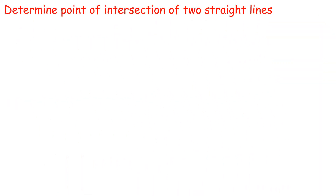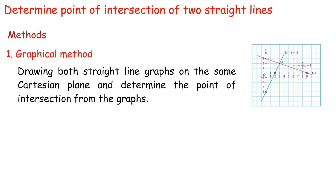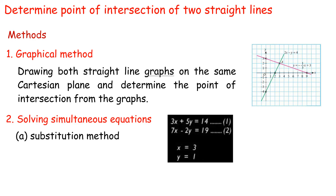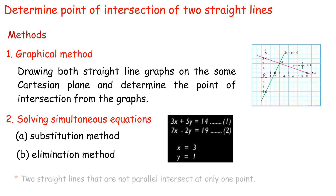Determine the point of intersection of two straight lines. Method 1: Graphical method — draw both straight line graphs on the same Cartesian plane and determine the point of intersection from the graph. Method 2: Solving simultaneous equations using (a) substitution method or (b) elimination method. Two straight lines that are not parallel intersect at only one point.